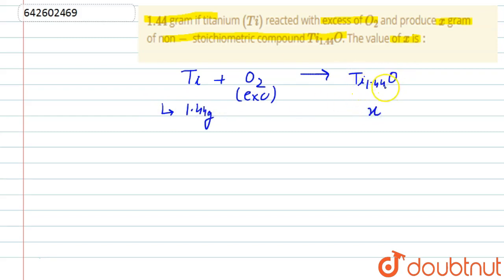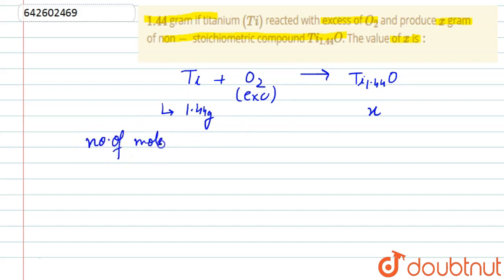First, we will calculate the number of moles of titanium. The number of moles of titanium equals the given weight, 1.44, divided by the atomic mass of titanium, which is 48 grams. This gives us the number of moles of titanium.